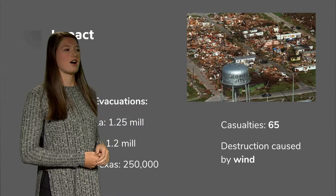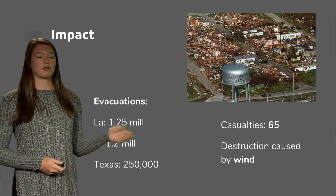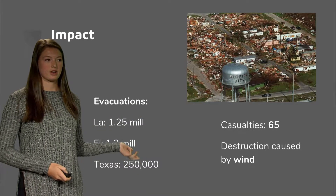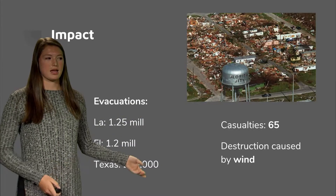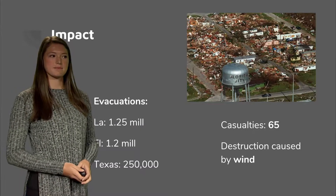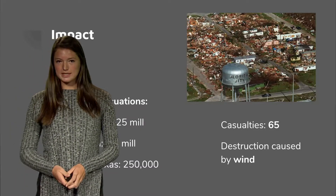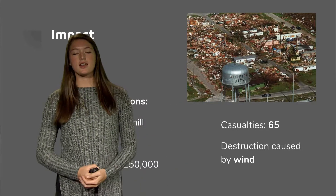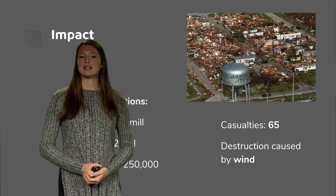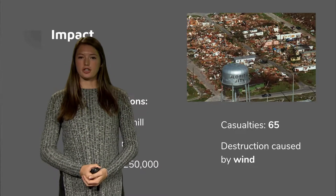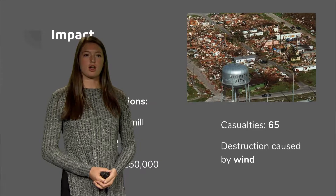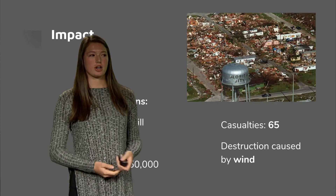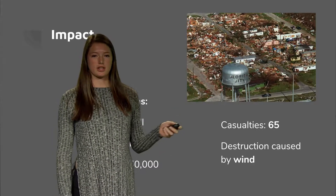During this hurricane, there were 1.25 million evacuations — 1.2 million in Florida and Louisiana, and 250,000 in Texas. There were 65 casualties, and most of the destruction, as you can see in this picture, was because of wind. Another thing that made this hurricane unique was that it was very early in the season, starting in August, which is unusual because hurricanes of this caliber don't typically start that early.